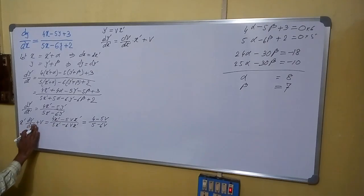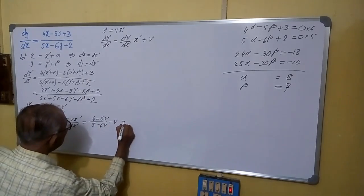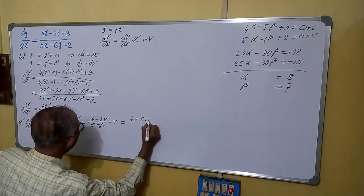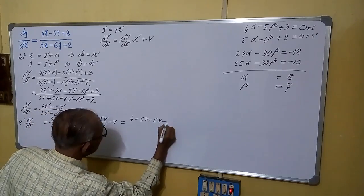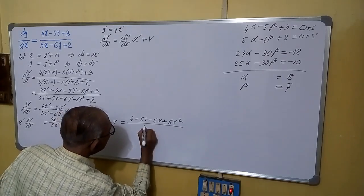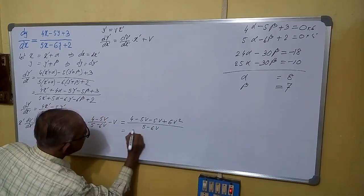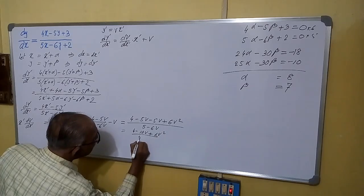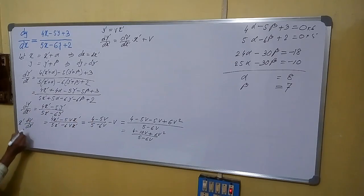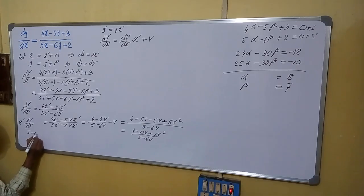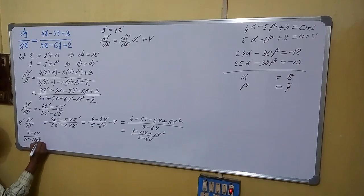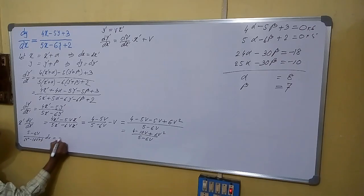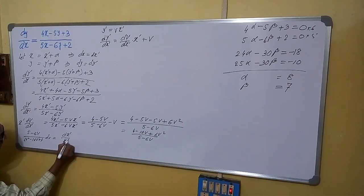Taking v to the other side, x dash times dv by dx dash equals 4 minus 5v divided by 5 minus 6v, minus v. This becomes 4 minus 5v minus 5v plus 6v squared, all over 5 minus 6v, which simplifies to 4 minus 10v plus 6v squared divided by 5 minus 6v. Rearranging: (5 minus 6v) dv divided by (6v squared minus 10v plus 4) equals dx dash by x dash.